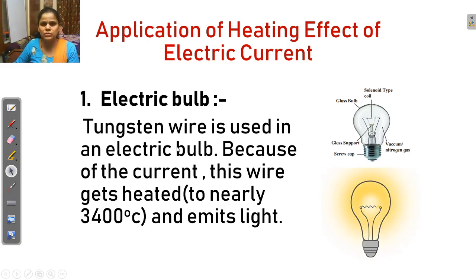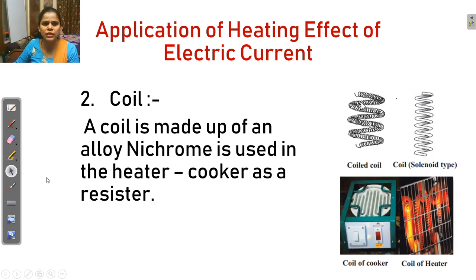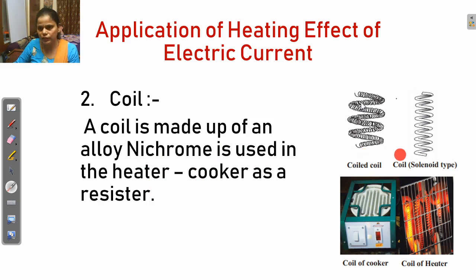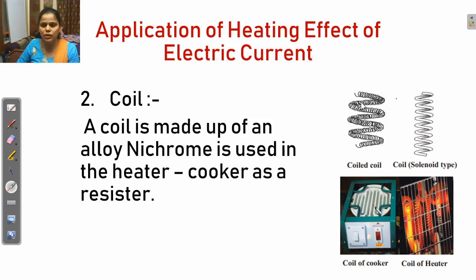The next application is in the coil. This coil is made up of the alloy nichrome, which is used in heaters and cookers as a resistor. As you can see in the diagram, the coil is wound in a solenoid type arrangement. These coils are used in coil cookers, electric cookers, and heaters.